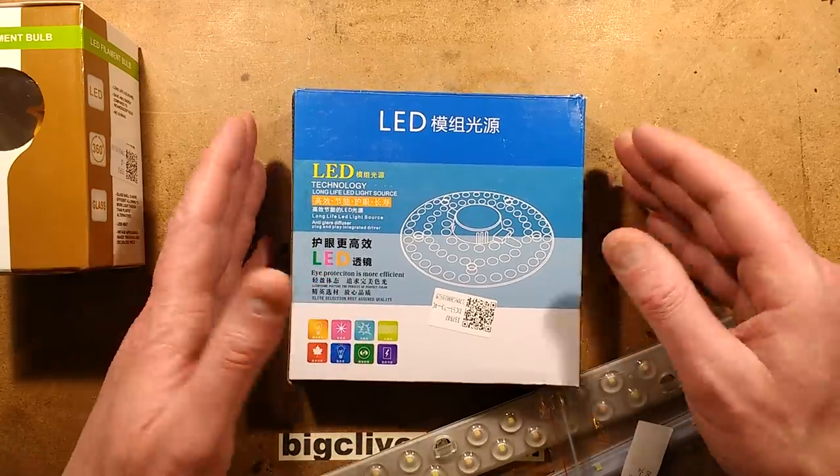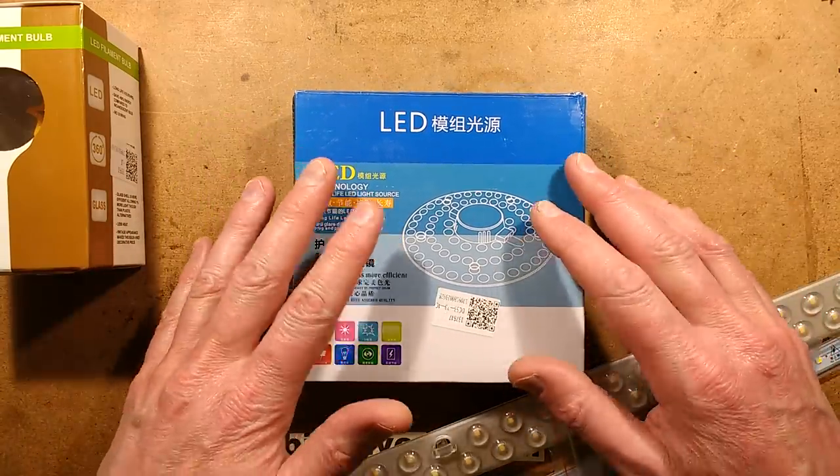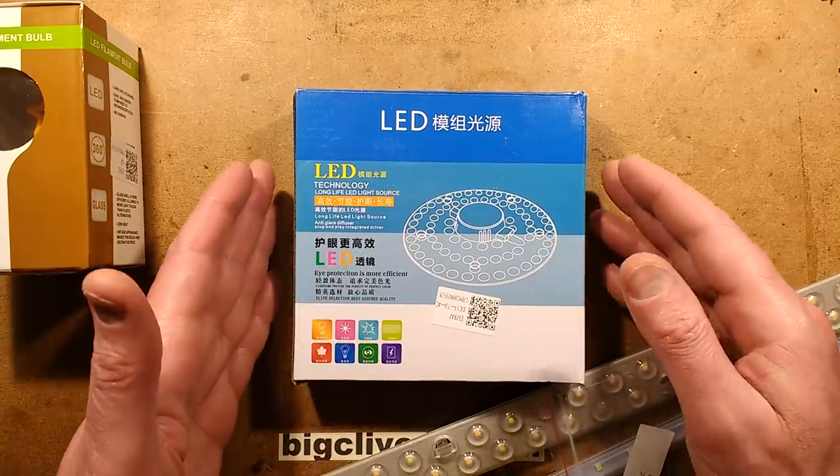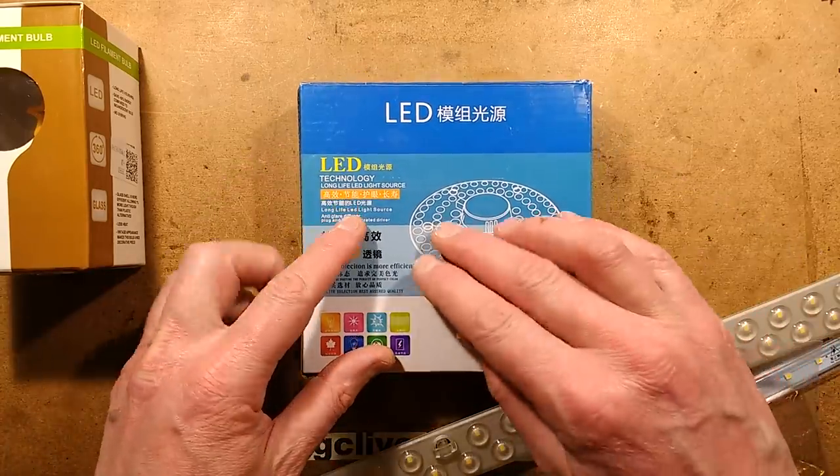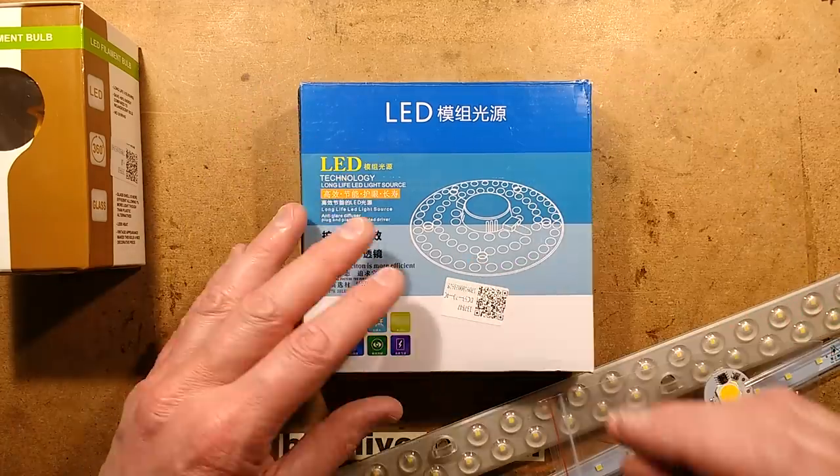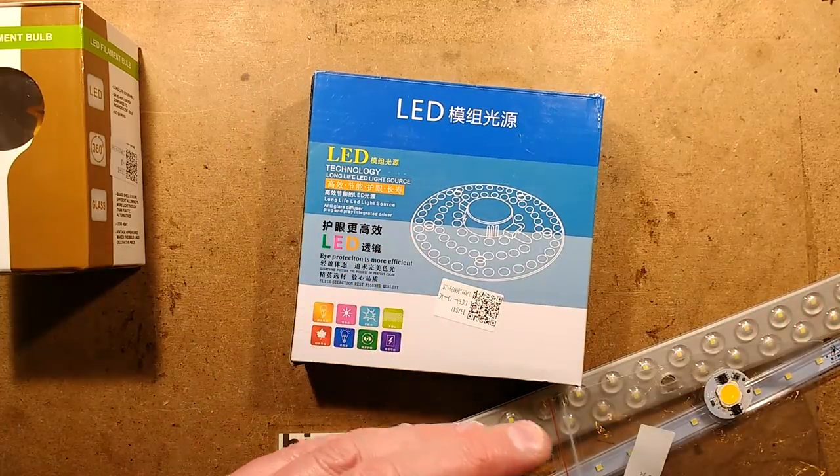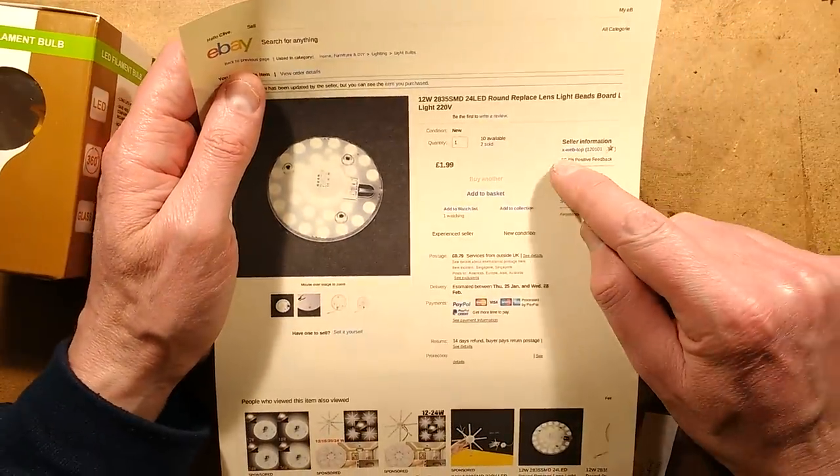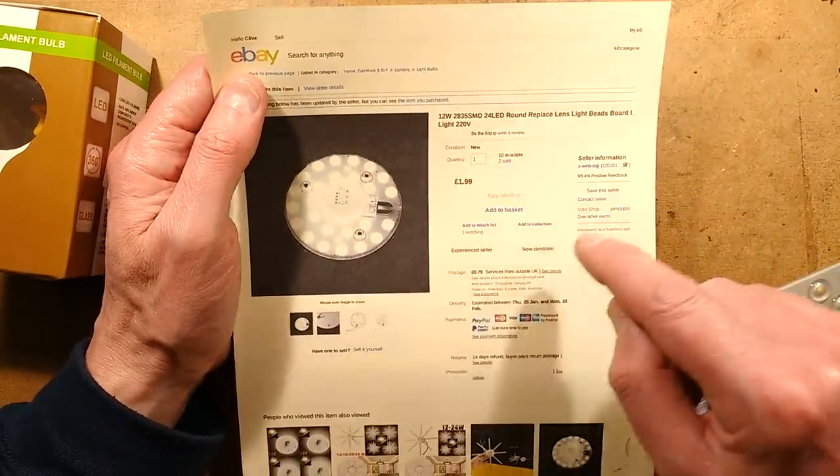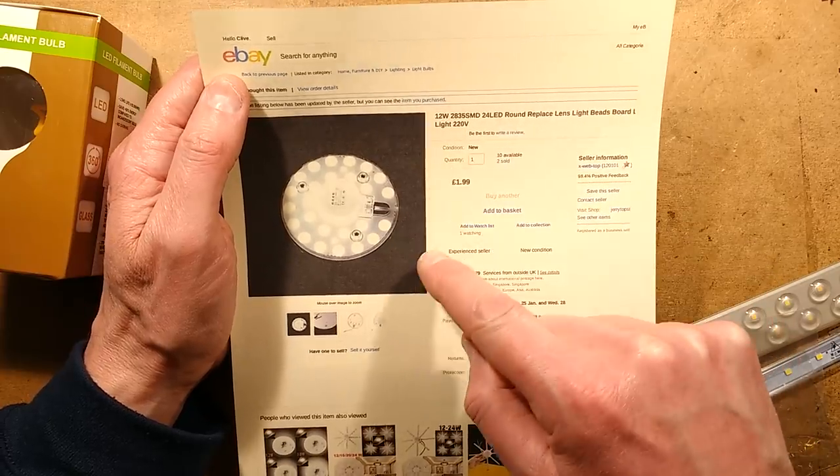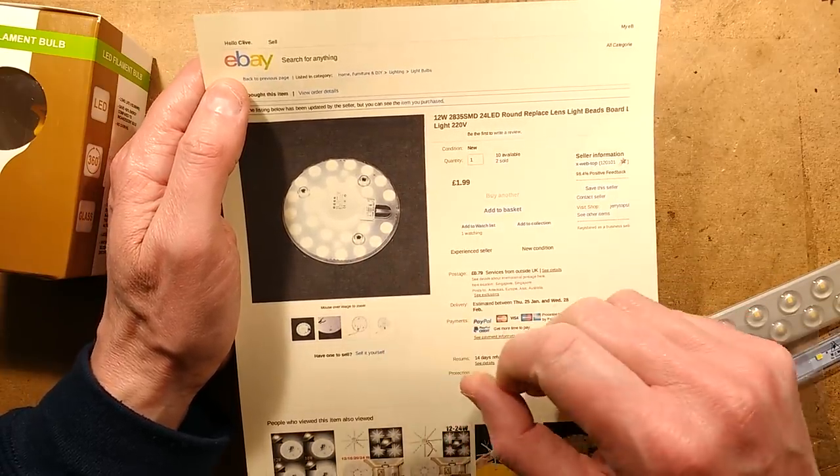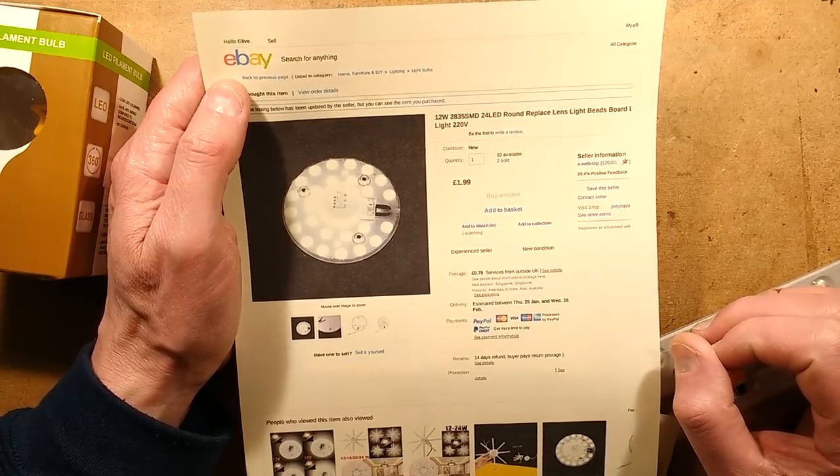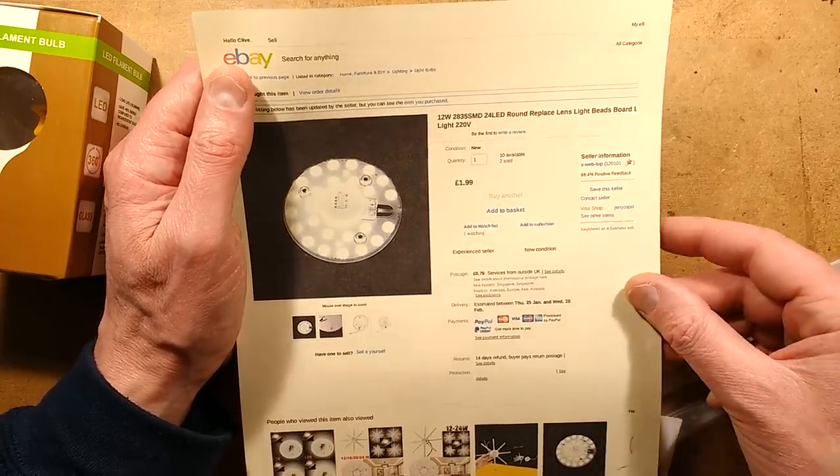I had an interesting delivery of stuff today. I was looking for random LED light sources on eBay and found a seller that had some really interesting ones. This is what this video is about - it's a round one. The seller was X-Web-Top and this is listed as a 12 watt lamp based on 2835 LEDs, 24 of them, which appear to be running at about half watt each.